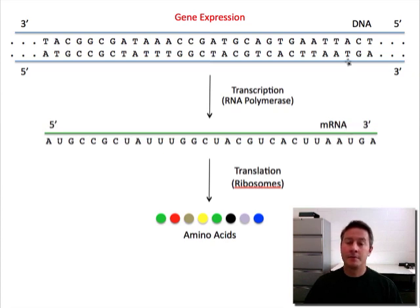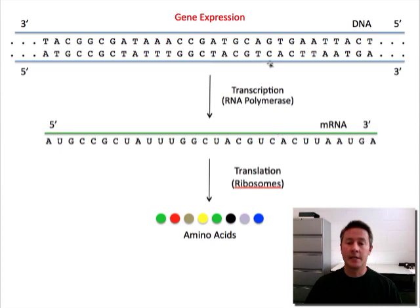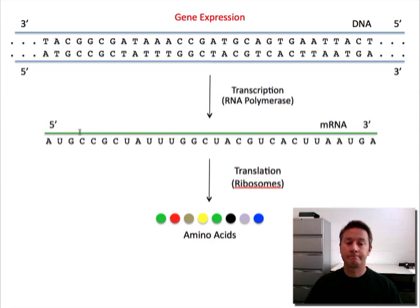The mRNA differs from DNA in three primary respects. First, as I said, it's single-stranded rather than double-stranded. Secondly, the sugar molecules in the sugar phosphate backbone are slightly different than in DNA — that's why I'm illustrating this backbone in a different color to denote that it's chemically different. And the third major difference is that in RNA, the thymines — the T's — are replaced by a close chemical cousin called uridine, symbolized by U. So rather than a TG sequence, in the RNA it will be AUG. With transcription, the RNA polymerase comes through and makes this single-stranded mRNA copy of a particular gene.